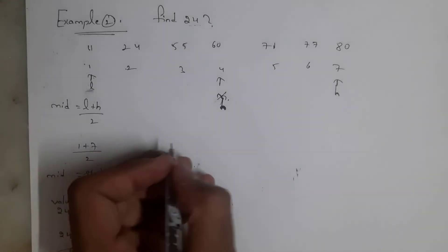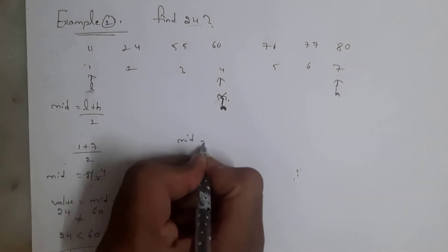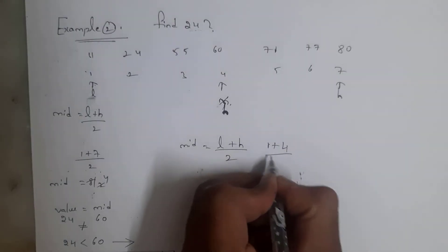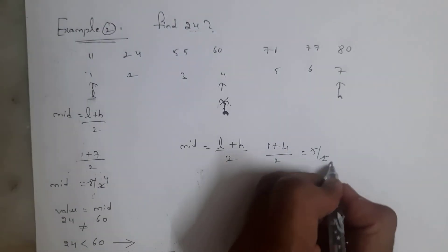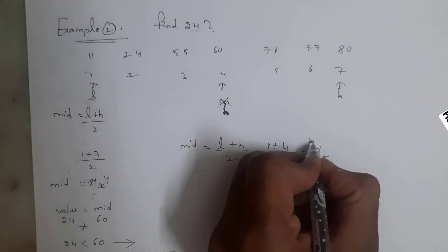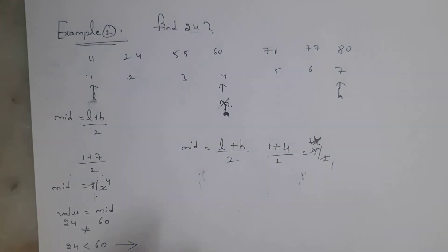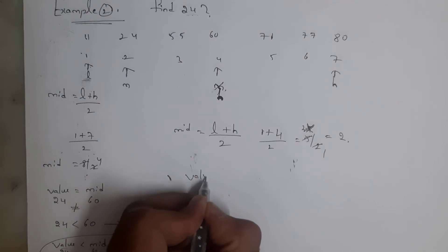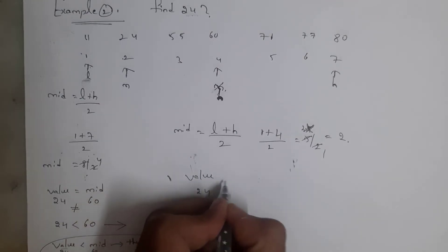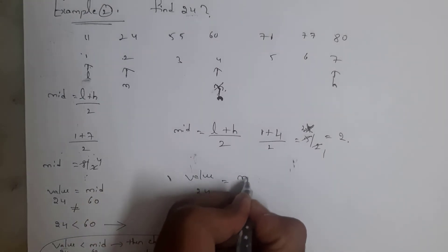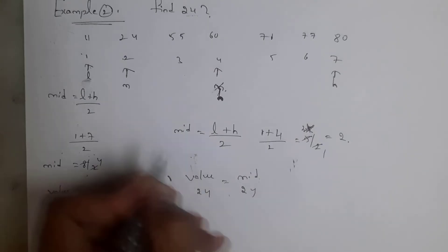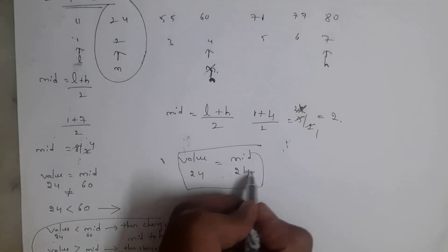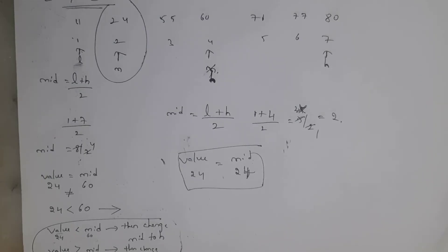Again we need to find mid. Formula: mid = (lower + higher) / 2 = (1 + 4) / 2 = 5 / 2 = 2.5 — don't consider the element after the decimal point, so mid is 2. The value we need to find is 24, and the mid value at position 2 is 24. Therefore, we got our result. If value is equal to mid, we have successfully searched that element.